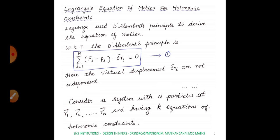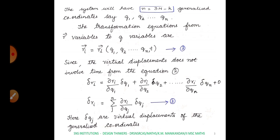Here the virtual displacements delta-ri are not independent. We consider a system with N particles at r1, r2, ..., rN vectors having k equations of holonomic constraints. The system will have n = 3N minus k generalized coordinates, say q1, q2, ..., qn.